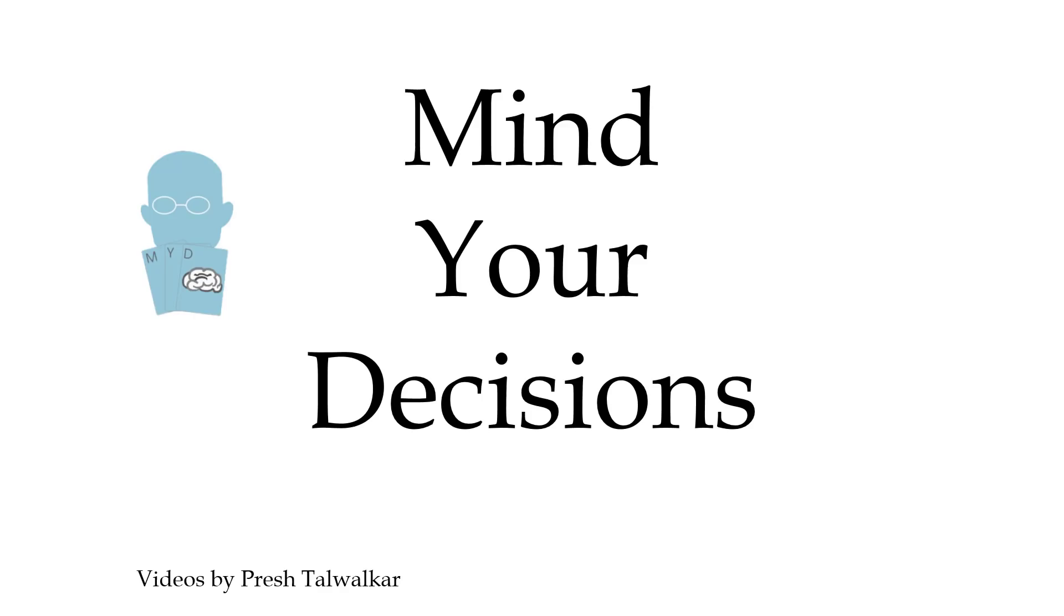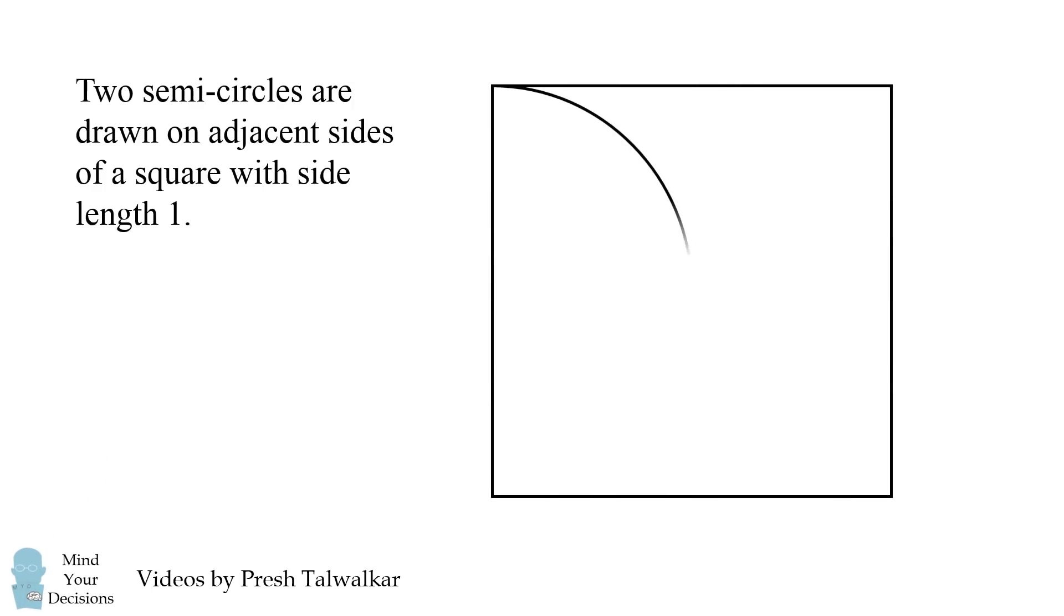Hey, this is Presh Talwalkar, and you're watching Mind Your Decisions. Here's a fun geometry problem. Two semicircles are drawn on adjacent sides of a square with side length 1.